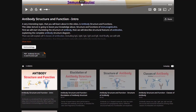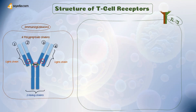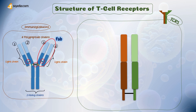Now let's compare the structure of BCR or immunoglobulin with that of TCRs. The overall structure of TCRs resembles the antigen binding fragment or FAB portion of the immunoglobulin. While immunoglobulin is made of four polypeptide chains, TCRs are made of only two polypeptide chains — either alpha and beta chains in alpha-beta TCRs, or gamma and delta chains in gamma-delta TCRs. Only two chains are found at a time in a given TCR molecule.